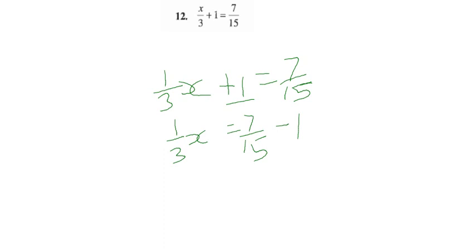First we have to simplify the right side. So (1/3)x equals... see this 15. We can write it like this. The common denominator is 15. So we have 7/15 minus... I think you understand how to do this.